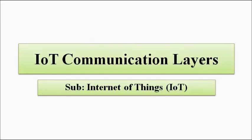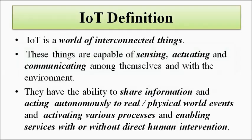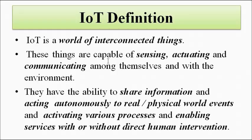The topic of today's discussion is the communication layers and levels. IoT can be defined as a world of interconnected things, where each and every thing — a simple electronic or electrical apparatus, appliance, or machinery powered by electrical means — is connected to the internet for sensing, actuation, monitoring, processing, control, or simply to exchange or share data among various devices, and everything is automated.